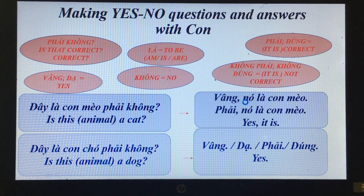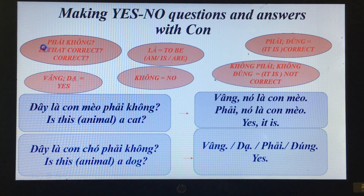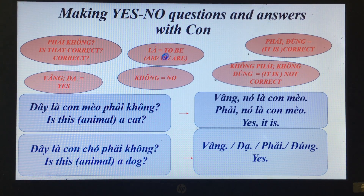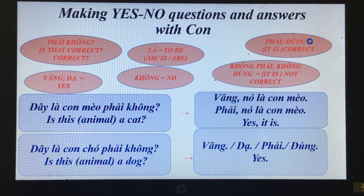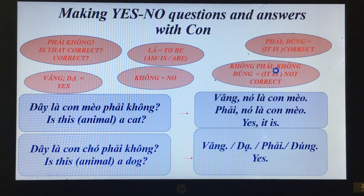Now we have yes/no questions and answers with 'con'. New vocabulary: 'phải không' means 'is that correct?', 'phải' or 'đúng' means correct, 'vâng' or 'dạ' means yes, 'không' means no, 'không phải' or 'không đúng' means it's not correct.